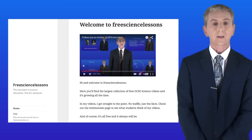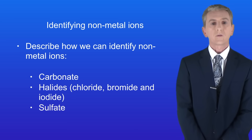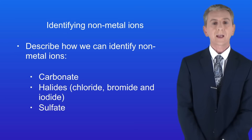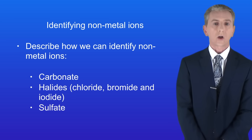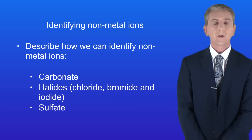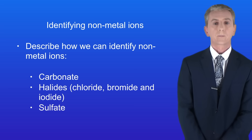Hi and welcome back to freesciencelessons.co.uk. By the end of this video you should be able to describe how we can identify non-metal ions. These ions are carbonate, the halides chloride, bromide and iodide, and finally sulfate. This is for triple chemistry students only.